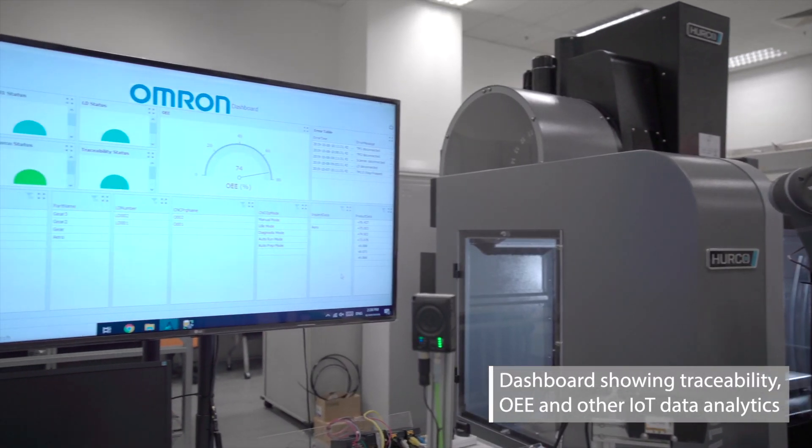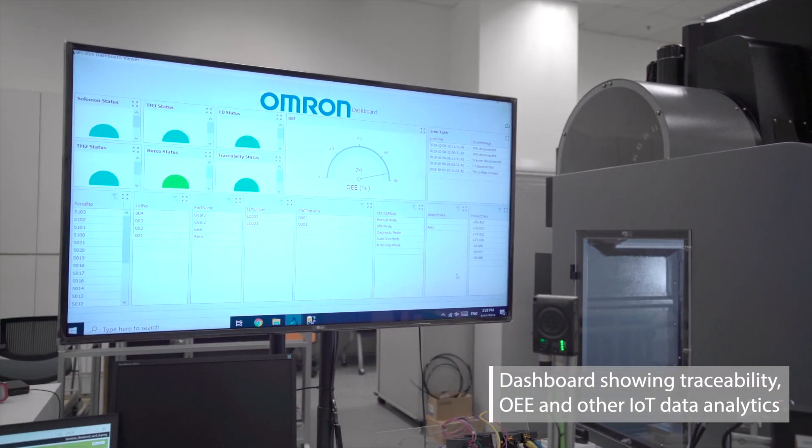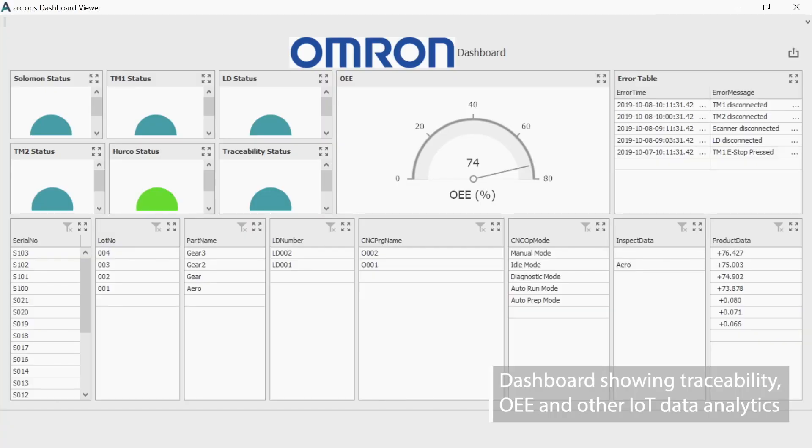Throughout this entire process, critical traceability information like the measurement data and the ID are captured by OMRON's advanced PLC into an SQL database and displayed on the dashboard.